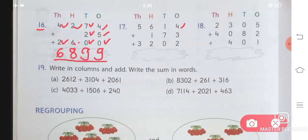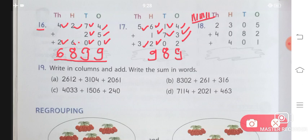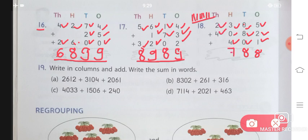17th one: 4 plus 3 plus 2 — moving on — 0 plus 8 plus 0 will give you 8. 3 plus 0 plus 4 will give you 7, and 2 plus 4 will give you 6. Answer is 6, 7, 8, 8.